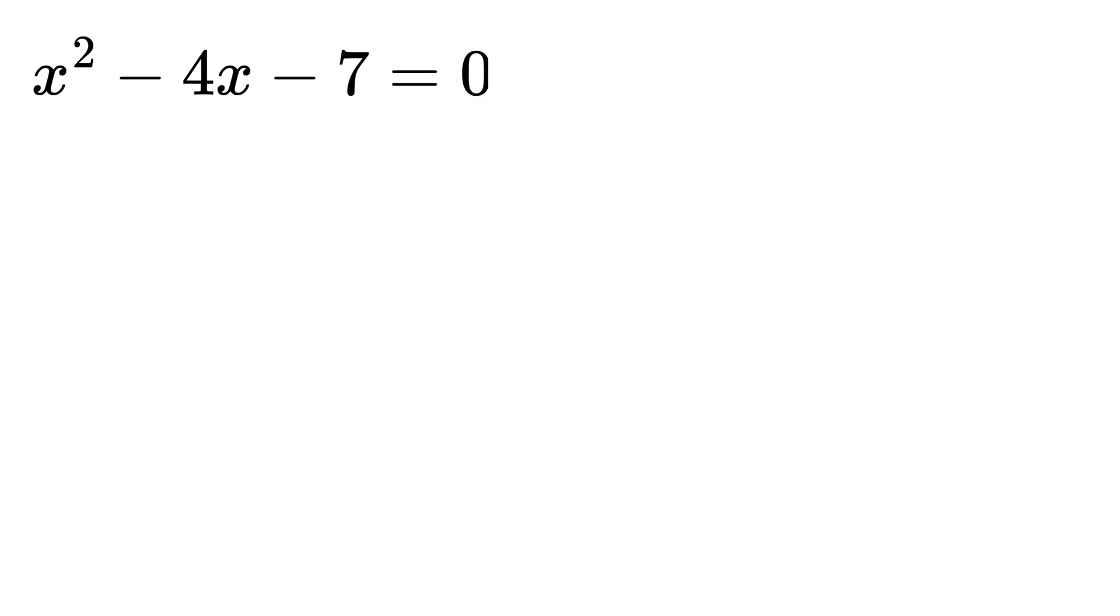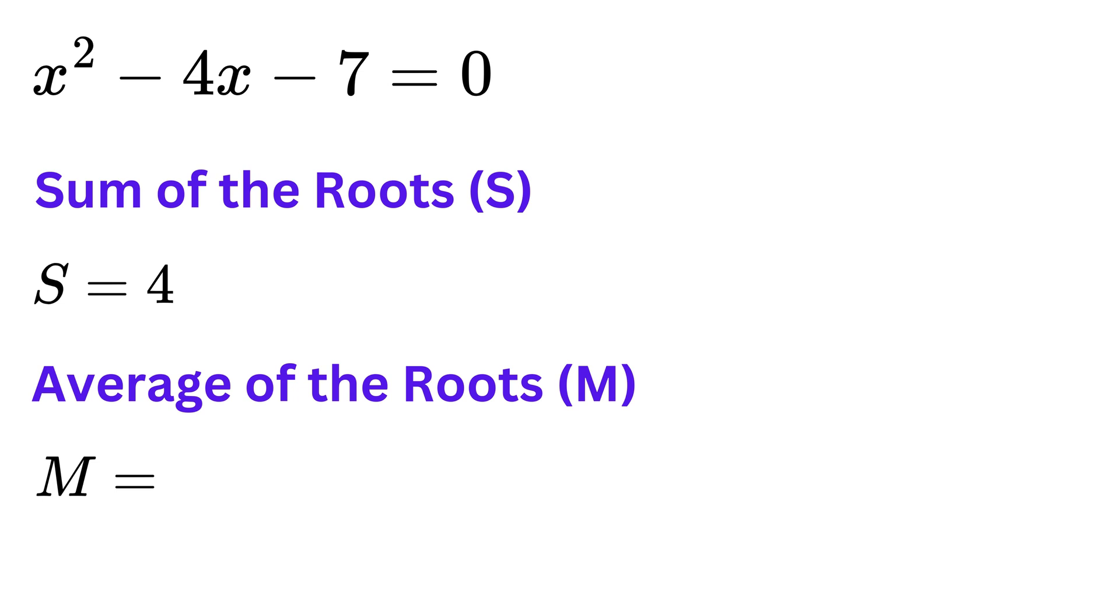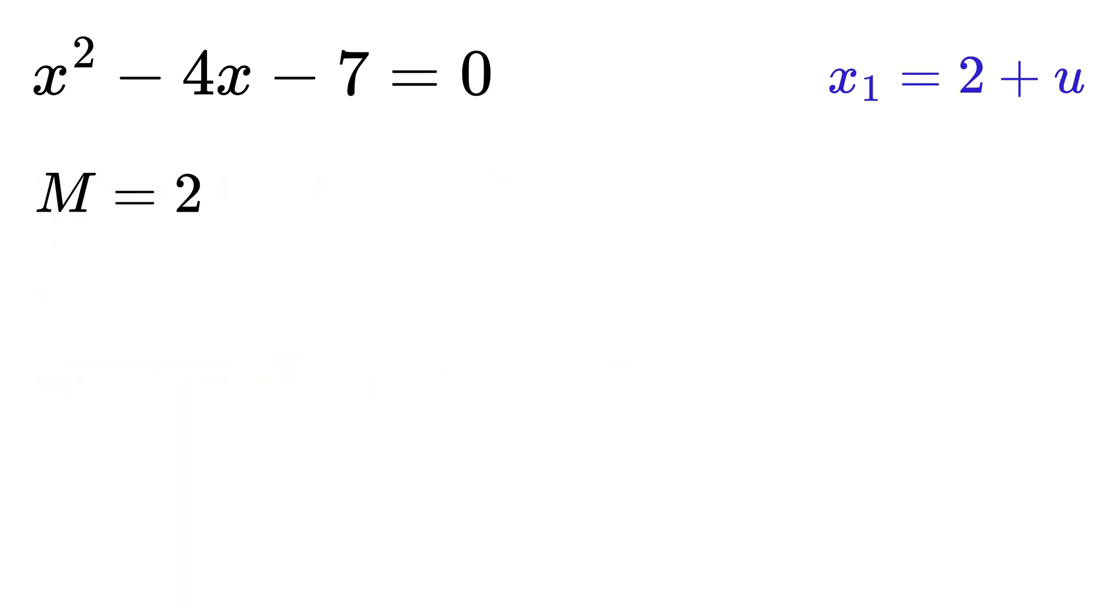Let us look at one more example, this one. Sum of the roots equals 4, and thus the average will be 2. Now, the roots will be 2 plus U and 2 minus U,